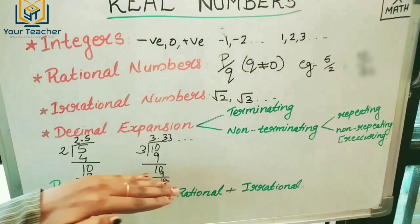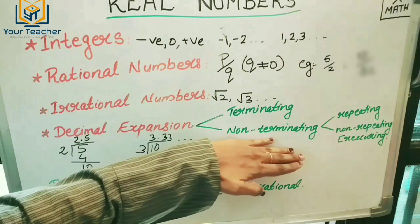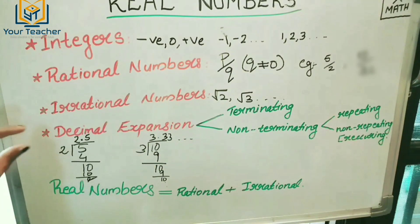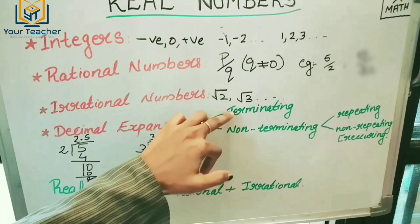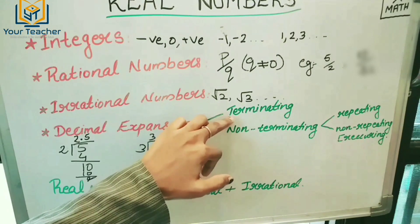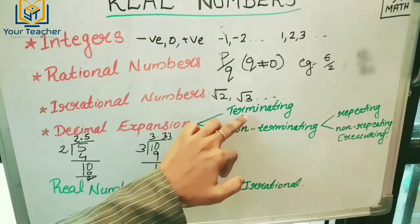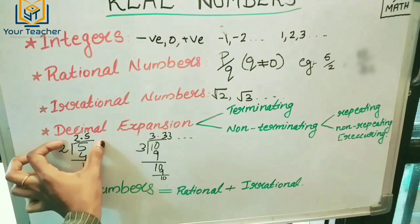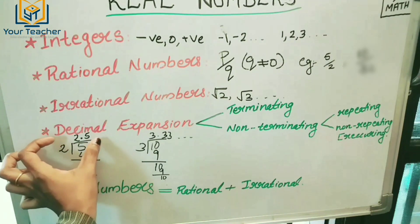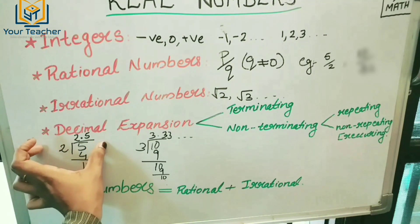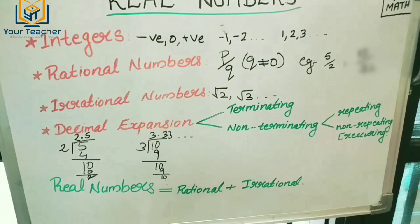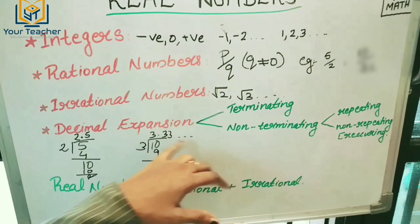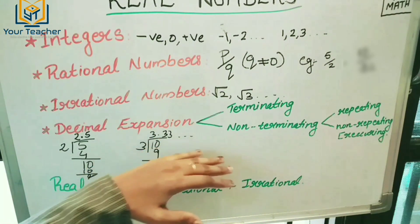Non-Terminating Decimal Expansion means it is endless — it continues to go. The remainder never becomes zero, so the decimal expansion does not terminate.